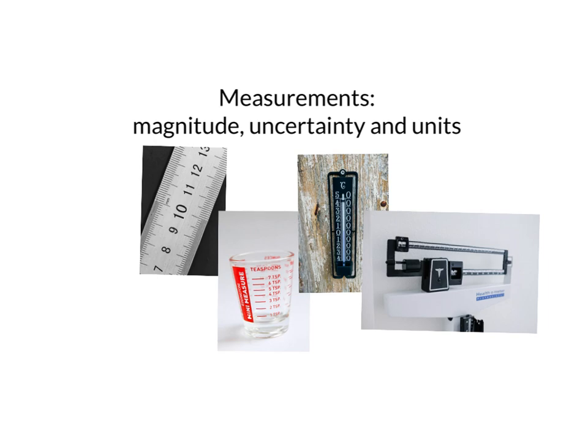If I wanted to measure the mass of something — say, how much I weigh — I would step on a scale and measure my mass. That number would have units of mass, which could be pounds, ounces, kilograms, or grams. You can see that there are multiple different units for every type of measurement, so if we don't specify the units, the magnitude doesn't really tell us anything.